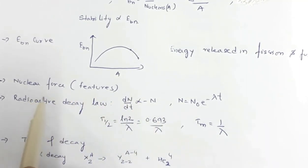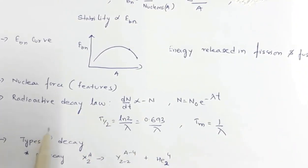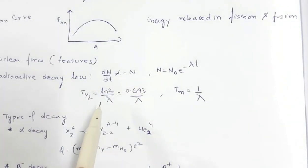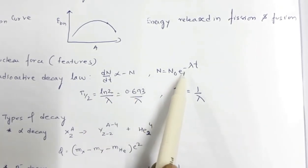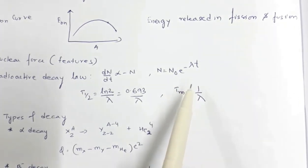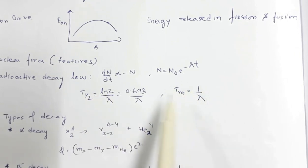Next is the nuclear force and its features — it is short-range and charge-independent. Then the radioactive decay law, also called the Rutherford-Soddy law: the rate of decay is proportional to the number of undecayed nuclei, giving N = N₀ e^(−λt), where λ is the decay constant, also called the probability of decay. The proofs of expressions for half-life and mean life may also be asked.